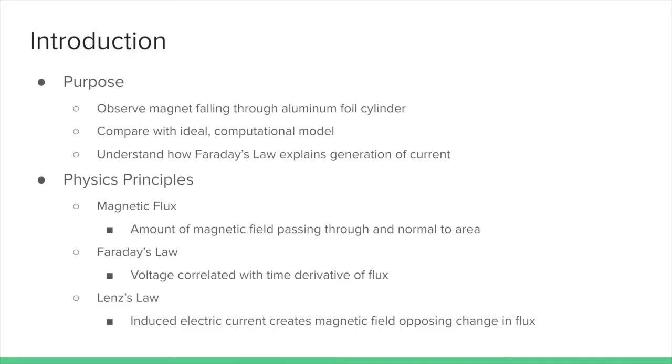The purpose of this lab is to observe a magnet falling through an aluminum foil cylinder. We will compare this scenario with an ideal computational model. Finally, we will understand how Faraday's Law explains the generation of current in this particular situation.